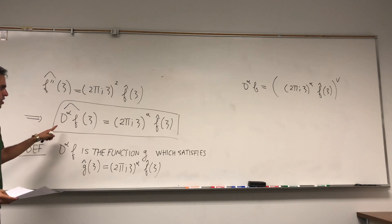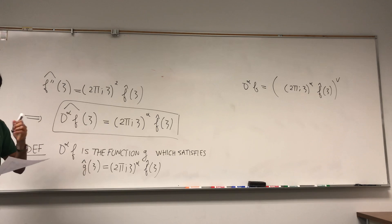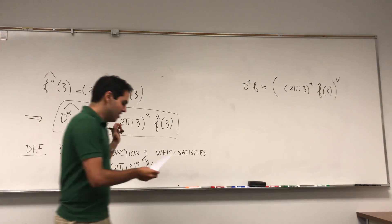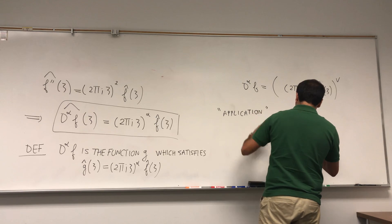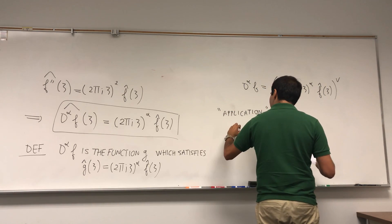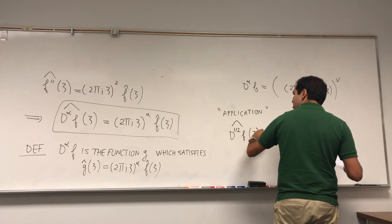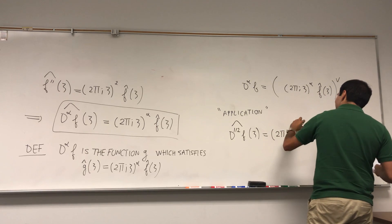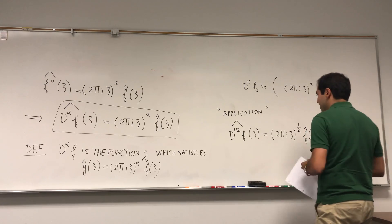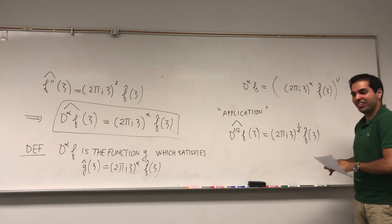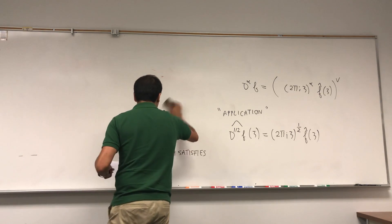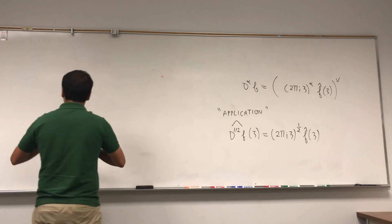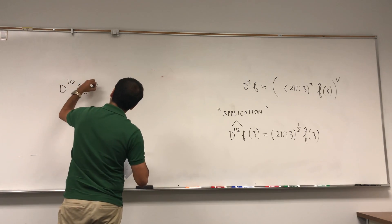Let me show you that with this definition, it does satisfy the key property: the half derivative of the half derivative is the derivative. The half derivative is defined as the function whose Fourier transform is (2πiξ)^{1/2} times f̂(ξ). You can interpret this in terms of a signal — you get a square root signal from there. But let me actually show you that D^{1/2} of D^{1/2} f gives you f prime.